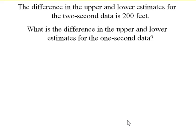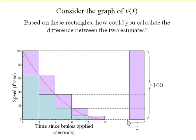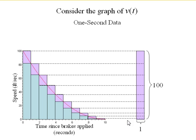What about for one second? Well, if you remember, our upper and lower estimates were 385 and 285, so they were 100 feet apart. Well, here they are for the two-second time interval. Here they are for the one-second time interval.